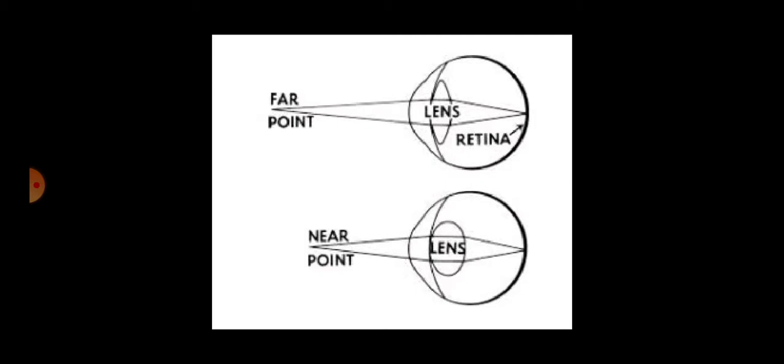Because it has an elastic structure, it can change its shape depending on the distance of the object we want to see. For example, if the object we want to see is near to our eye, the middle part of the lens becomes more thick and looks round. But if it is far from our eye, the lens becomes thin and looks flat. You can observe from the picture on the screen.